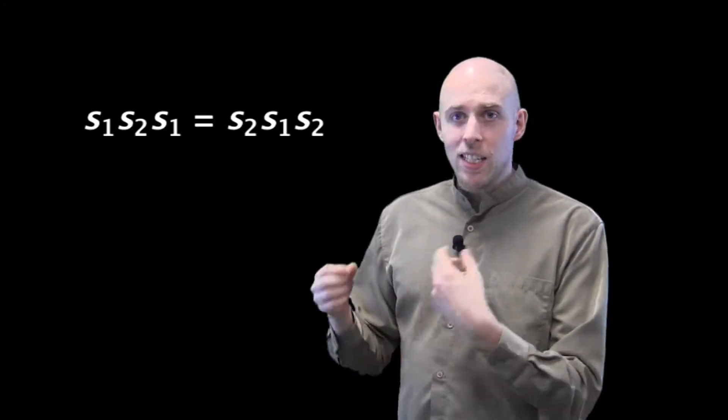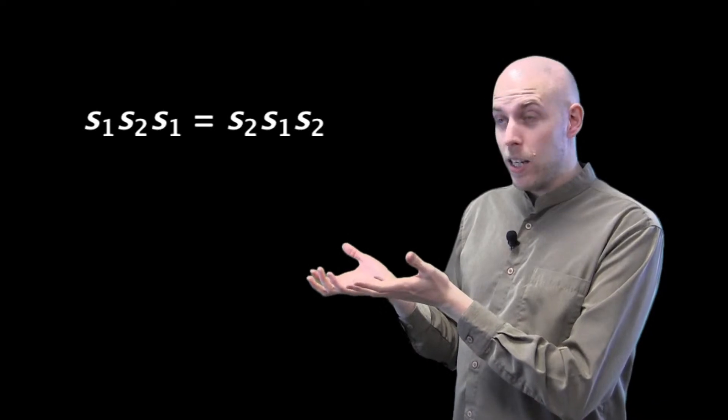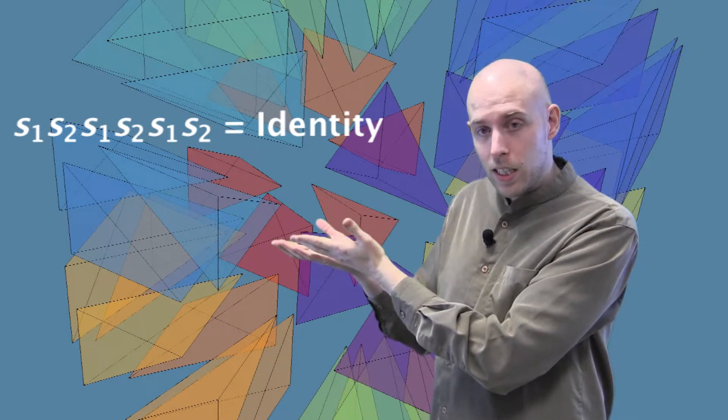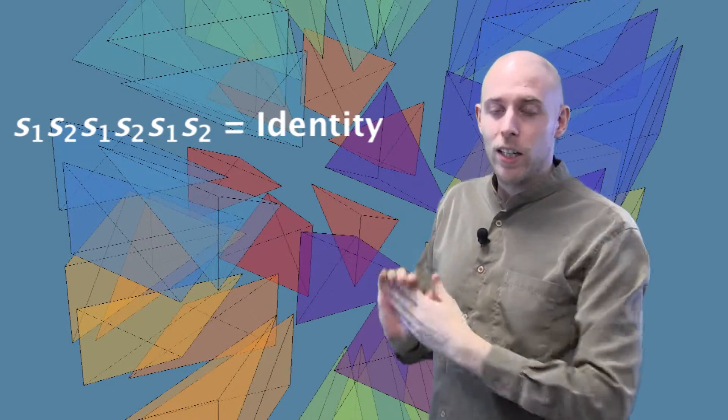Another way to write S1, S2, S1 equals S2, S1, S2 is S1, S2 to the third power is equal to the identity. Or in other words, (S1, S2)³ equals the identity.